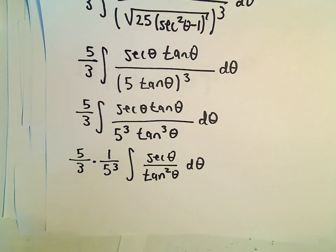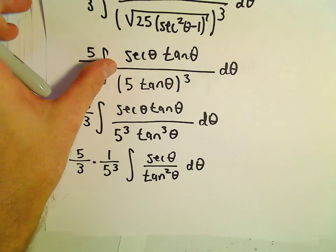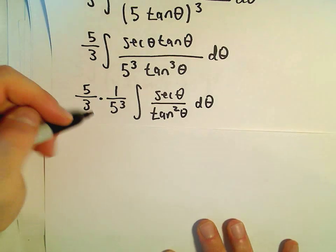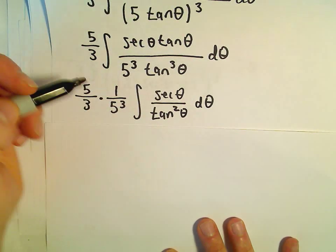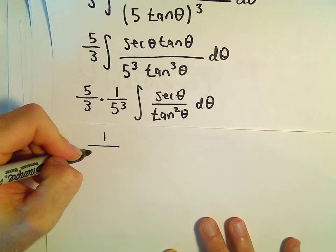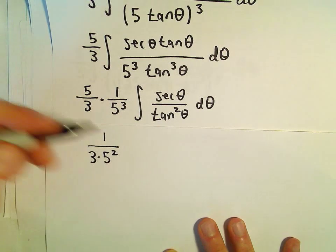So now we get to integrate this lovely thing. You know, secant theta over tangent theta. So the first thing I think about is trig substitution or u substitutions. But I'm not sure how that's going to work. Let's do this part real quick. So 5 over 5 cubed, that would leave us with 3 times 5 squared in the denominator.